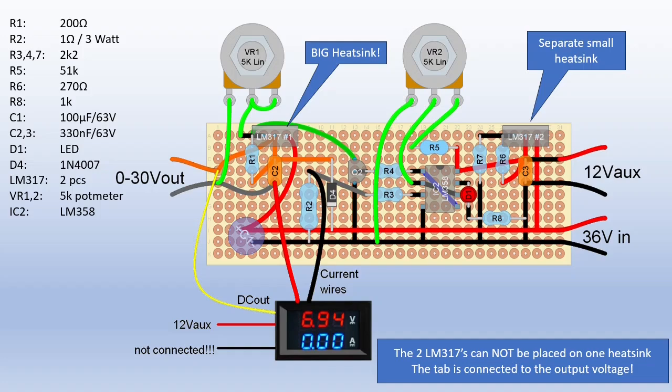Note that the LM317 cannot be placed on one heatsink. The tab is connected to the output, so you will short the 12V output to your lab power supply output. I use an IC socket for the LM358. That is much easier for debugging. I also indicated here how to connect the panel meter. If you use this combined type voltage and current meter, do not connect the thin black wire. Both black wires are connected internally and you do not want to short your own shunt R2.